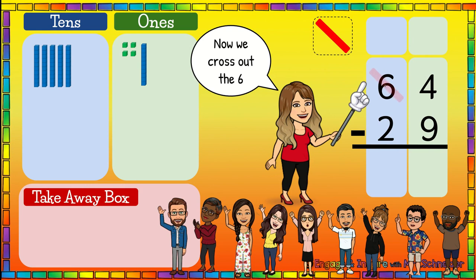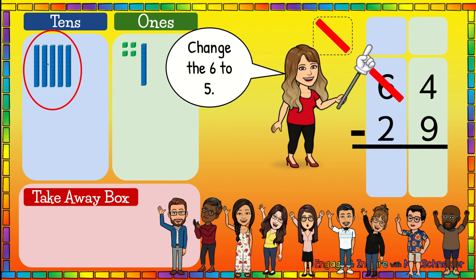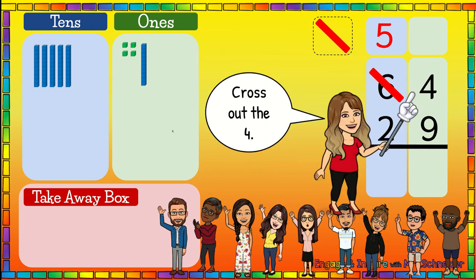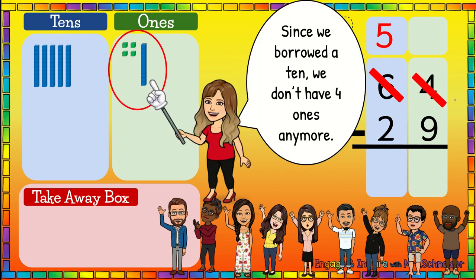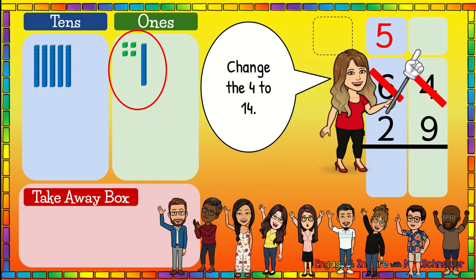Now we're going to cross out the six because we don't have six tens anymore. Since we regrouped one of the tens into the ones place, now we only have five tens in the tens place. So we're going to change the six to five because that's how many tens we have left. Now we're going to cross out the four. Since we borrowed a ten, we don't have four ones anymore. Now we have ten plus four, which is fourteen. So we're going to change this four to fourteen. We have a five in our tens place and fourteen in our ones place.